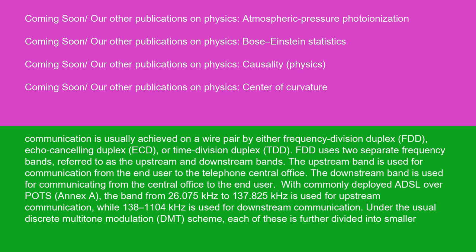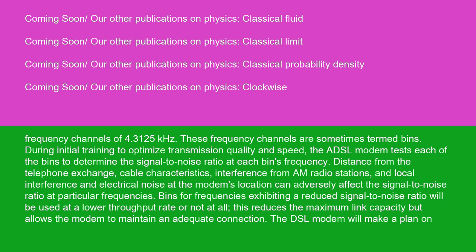With commonly deployed ADSL over POTS, the band from 26.075 kHz to 137.825 kHz is used for upstream communication, while 138 to 1,104 kHz is used for downstream communication. Under the usual discrete multi-tone modulation, DMT, scheme, each of these is further divided into smaller frequency channels of 4.3125 kHz, sometimes termed bins. During initial training to optimize transmission quality and speed, the ADSL modem tests each of the bins to determine the signal-to-noise ratio at each bin's frequency. Distance from the telephone exchange, cable characteristics, interference from AM radio stations, and local electrical noise can adversely affect the signal-to-noise ratio at particular frequencies. Bins for frequencies exhibiting a reduced signal-to-noise ratio will be used at a lower throughput rate, or not at all.